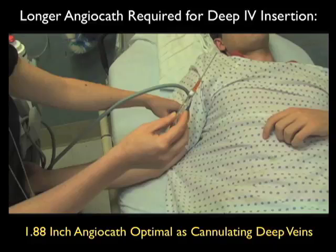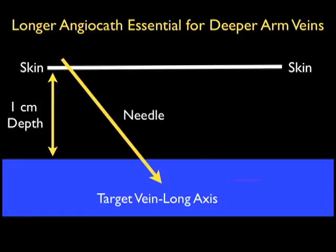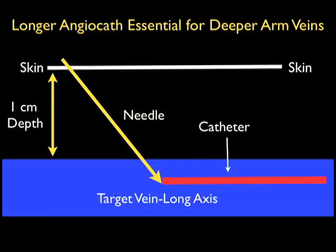This longer angiocath at 1.88 inches would be more optimal for cannulation of a deep arm vein using ultrasound guidance. This schematic shows why we need a longer angiocath: while the vein may only be one centimeter deep to the skin, the needle is not going directly down but comes in at about a 45-degree angle to cannulate the vessel. So we need a longer needle just to reach the target vein, plus we need an ample amount of catheter within the vessel lumen to avoid extravasation of fluids or medications. For this reason, 1.88 inch or longer is essential.